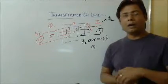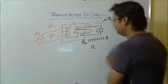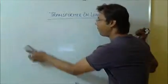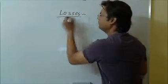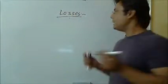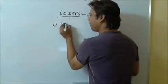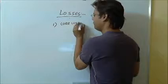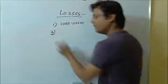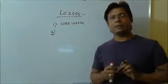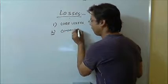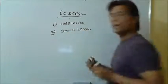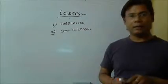Now we will discuss about the losses in the transformer. First come core losses. Second type of losses in the transformer are ohmic losses. Third type of losses are called stray losses.